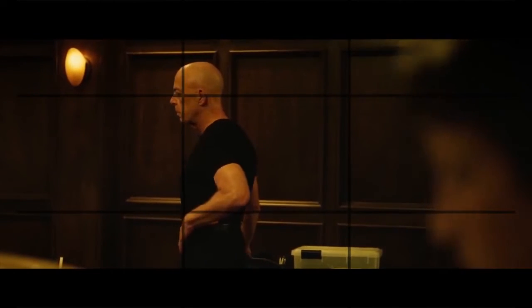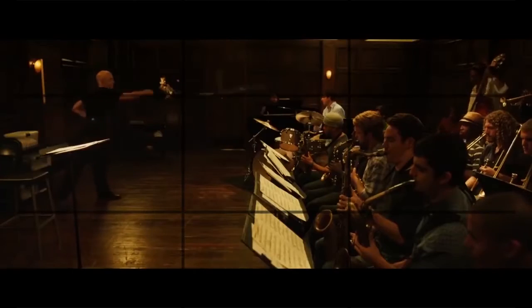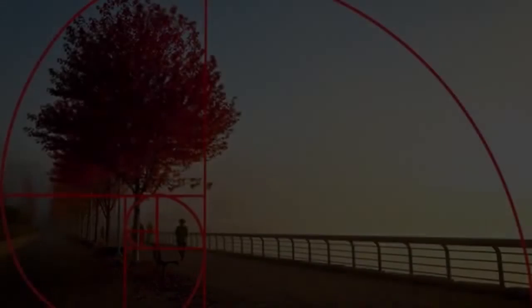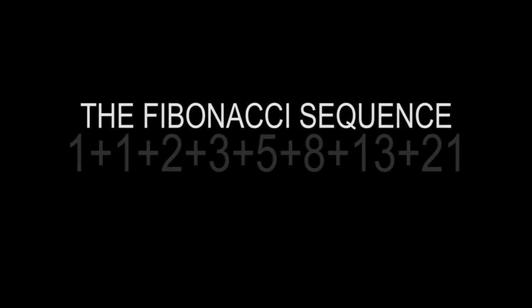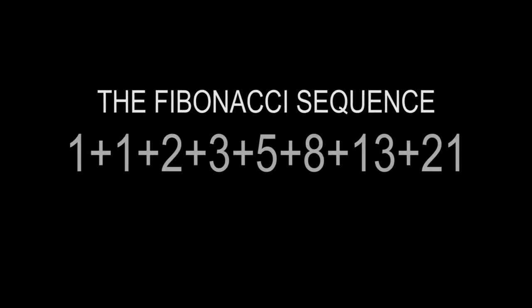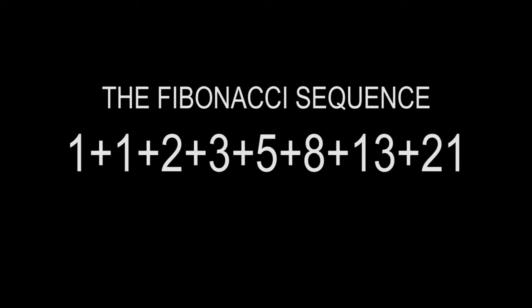What a lot of people don't think about is this second framing option, which is the golden ratio. The golden ratio comes from the Fibonacci sequence, which is a series of numbers that coincidentally add up to each other.